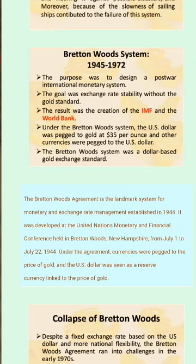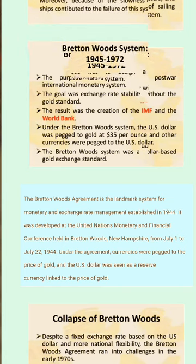Under this agreement, currencies were pegged to the price of gold, and the US dollar was seen as a reserve currency linked to the price of gold. The US dollar was pegged to gold at $35 per ounce, and other currencies were pegged to the US dollar. It was essentially a dollar-based gold exchange standard.